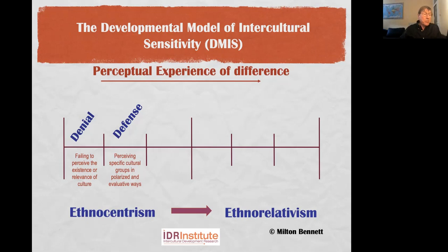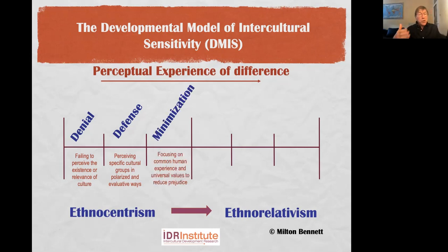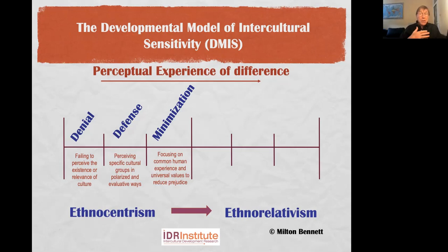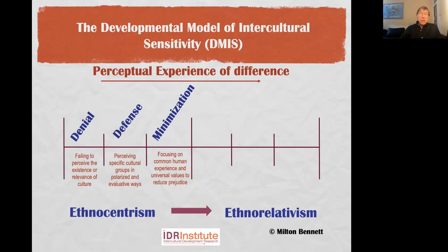This gives way — not always, but in situations demanding at least tolerance — to minimization. Minimization is focusing on common human experience and universal values, and its major purpose is to reduce prejudice. It's the stage that brings us out of a simplistic or stereotypical view of others and allows us to see other people as basically human. Unfortunately, we tend to see them as human like us — we project our own idea of reality on others and assume they are having a similar experience. Nevertheless, it's an improvement over thinking they're having a simpler or even inhuman experience.